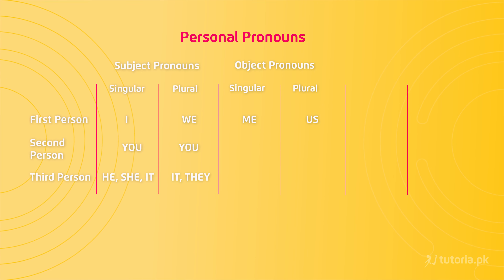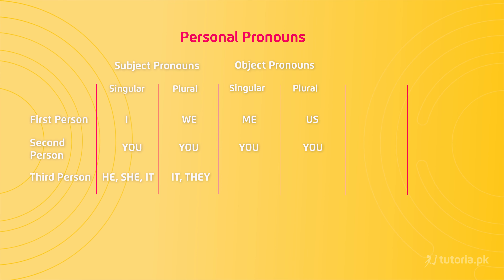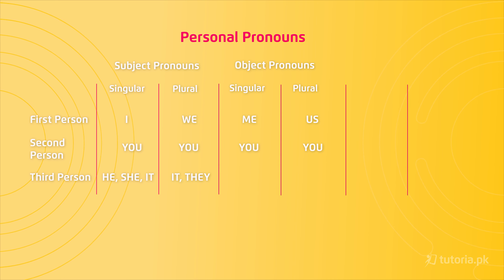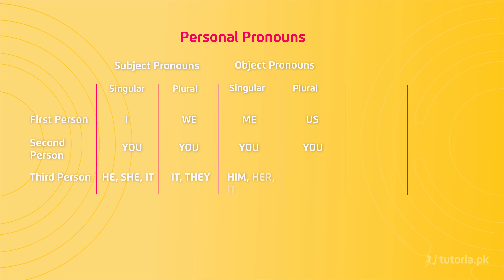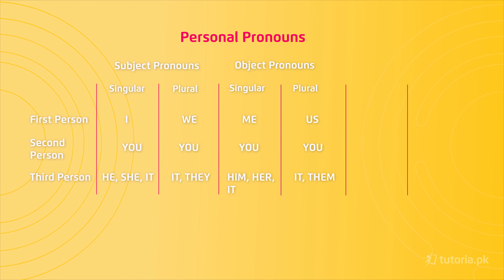Second person: if your object is singular or plural, in both cases you will use 'you'. Third person: if your object is singular, then you will use 'him', 'her', or 'it'. And in plural, you will use 'them'.